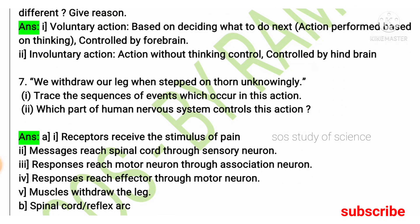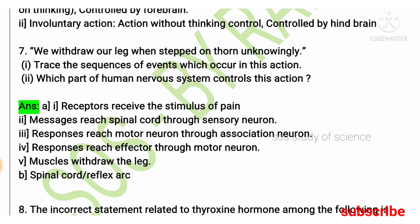When we withdraw our leg after stepping on a thorn unknowingly, this is based on reflex action. Trace the sequence of events: first, receptors receive the stimulus of pain. Second, the message reaches the spinal cord through the sensory neuron, and the response reaches the motor neuron through the association neuron. Then your effector is drawn back from that region. One question can be expected from this particular point.